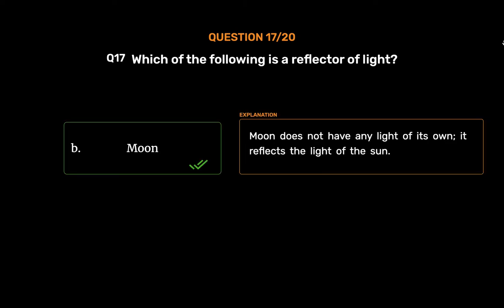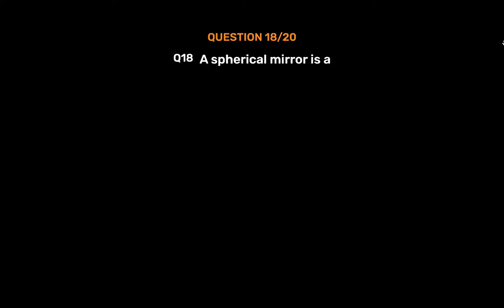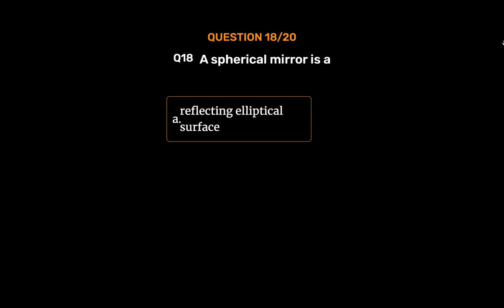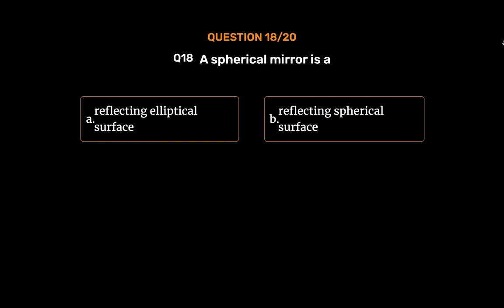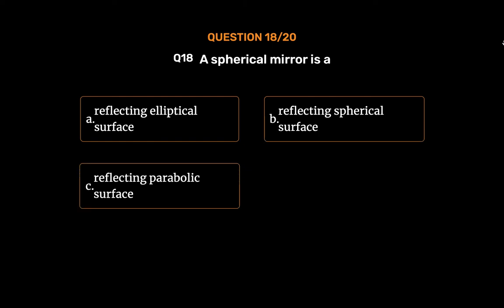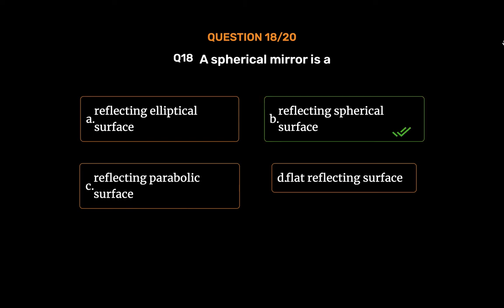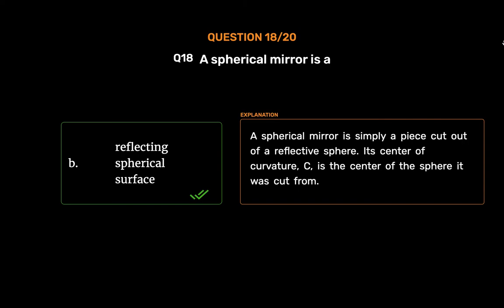Question No. 18: A spherical mirror is — Option A: Reflecting elliptical surface, Option B: Reflecting spherical surface, Option C: Reflecting parabolic surface, Option D: Flat reflecting surface. The correct answer is Option B: Reflecting spherical surface. A spherical mirror is simply a piece cut out of a reflective sphere; its center of curvature is the center of the sphere it was cut from.